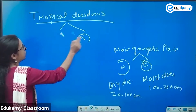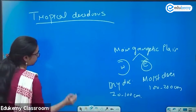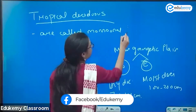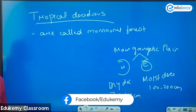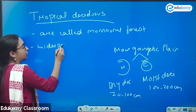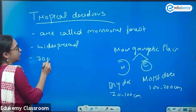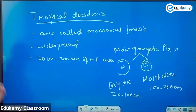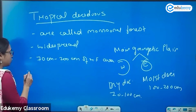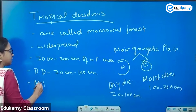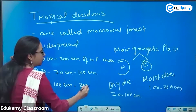Basically, the tropical deciduous forests are called the monsoon forests. They are very widespread in India, found in areas receiving 70 centimeters to 200 centimeters of rainfall. Dry deciduous forests occur in areas with 70 to 100 centimeters of rainfall, while moist deciduous forests occur in areas with 100 to 200 centimeters of rainfall.